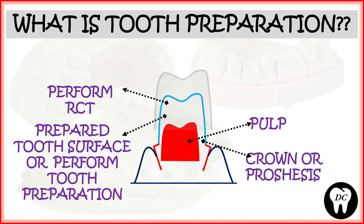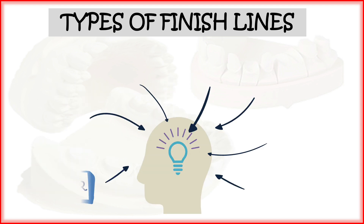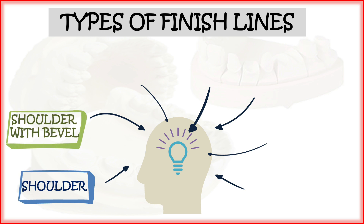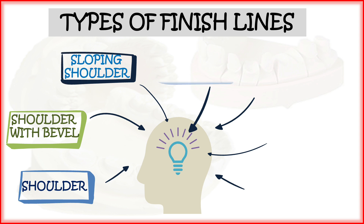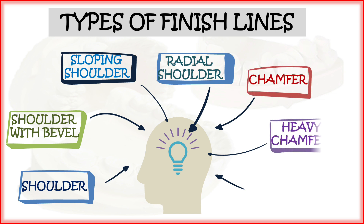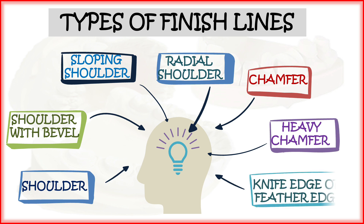There are different types of finish lines for different types of prostheses. These include: shoulder, shoulder with bevel, sloping shoulder, radial shoulder, chamfer, heavy chamfer, and knife edge or feather edge finish lines.